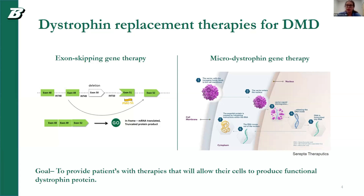What we want to know is how this protein is produced by these therapies and how effective it is as a dystrophin protein. In order to do this, it requires sensitive quantification methods, and in our case, we use SILAC. I will be going over those next.